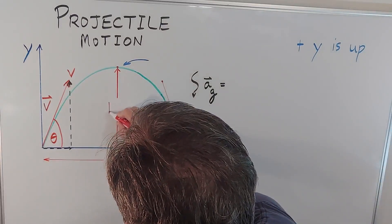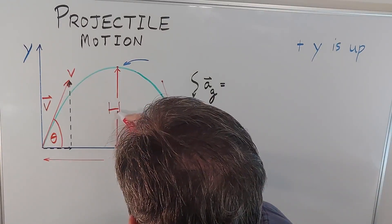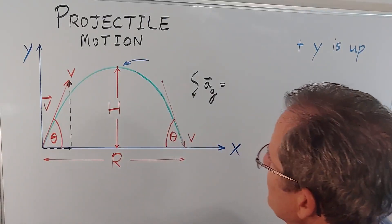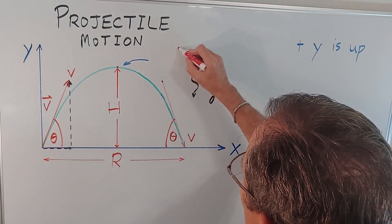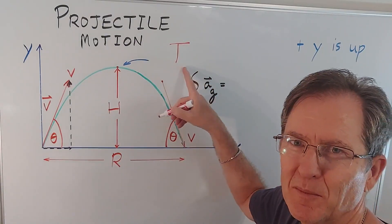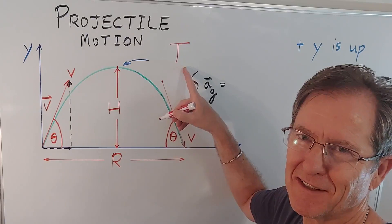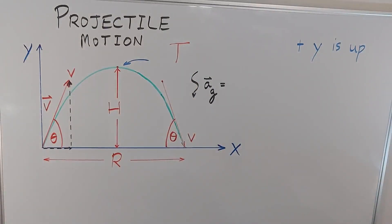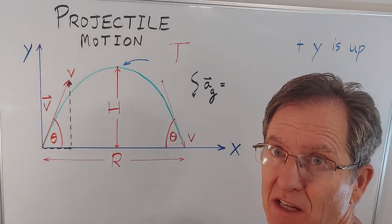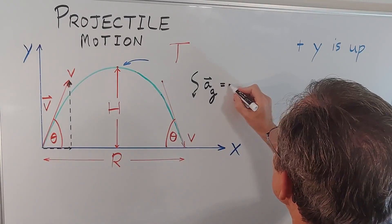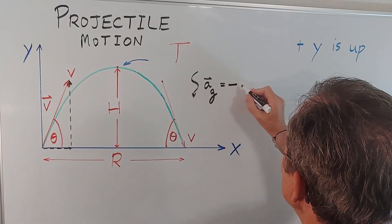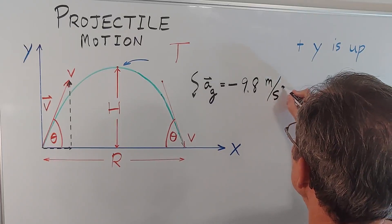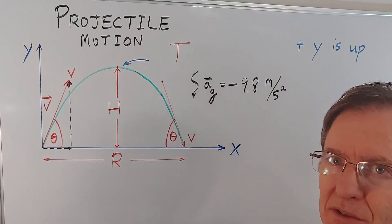So the maximum height I'm going to call capital H. The horizontal distance I'm going to call R for range. And the time it's in the air I'm going to call capital T. And I'll put it up in the air since that's the time in the air. See what I did there? The acceleration due to gravity, which is how quickly the speed changes, or the velocity changes, is down. So we say negative 9.8 meters per second per second, or meters per second squared on the surface of the earth.